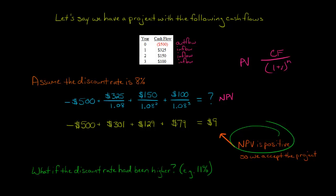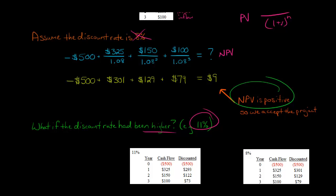Now, what if the discount rate, I told you it was 8%, but what if it had been higher? Let's just say hypothetically that it was instead 11%, that nothing changed about these cash flows, but instead of 8%, let's consider 11% and see how things would change.